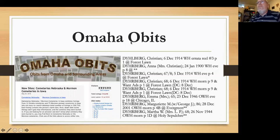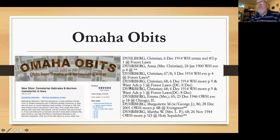I mentioned earlier Omaha Obits — this is just a WordPress site, but it's good because a husband and wife in Omaha have taken every obit and put it in the site in alphabetical order. You can look up people's obituaries, see what newspaper it was in, and then locate the newspaper. A lot of the Omaha and Lincoln newspapers are now online, so this site used to be more relevant, but it's still another resource I always like to share.